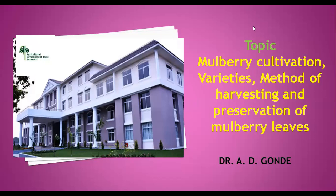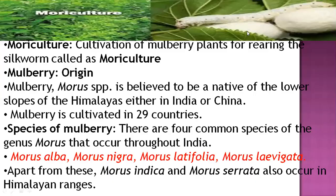Hello dear students. Today our topic is on sericulture — the mulberry cultivation. We will study important varieties grown in India for mulberry plant cultivation, different methods of harvesting required, and major preservation methods for mulberry leaves. The cultivation of mulberry plants is called Mori culture.